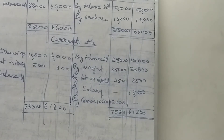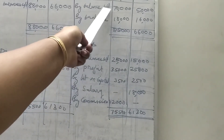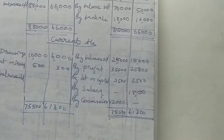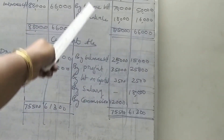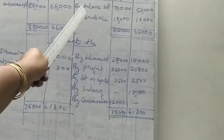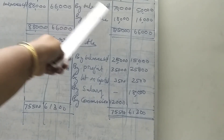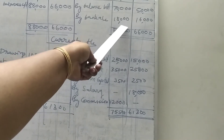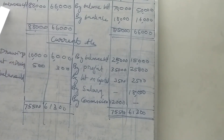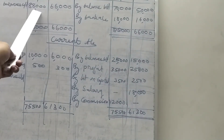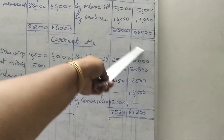First, capital on 1st April — the opening balance: Ruben 70,000 and Derry 50,000. That is given in the question. Then additional capital introduced — by bank: Ruben 10,000 and Derry 16,000. These are the two items entered in the capital account under the fixed capital method. The total gives us a balance carried down of 88,000 for Ruben and 66,000 for Derry. The capital account is now complete.